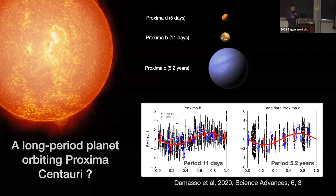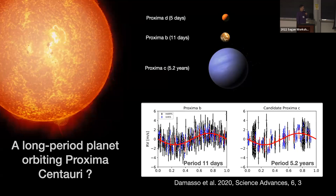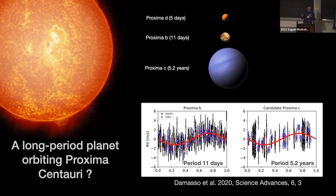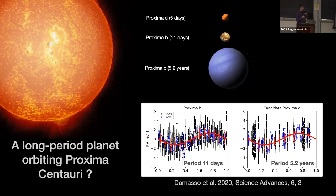Let's apply that to Proxima Centauri — a red dwarf, a very low mass star, known to have three planets B, C, and D, with periods ranging from five days to five years. The two shorter-period planets are not detectable with Gaia at all, but the third one with its five-year period is, in principle, in the best sensitivity range of Gaia.